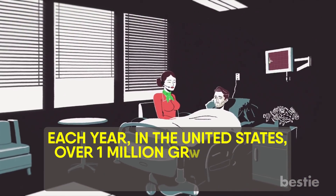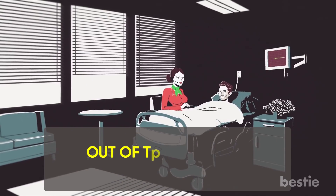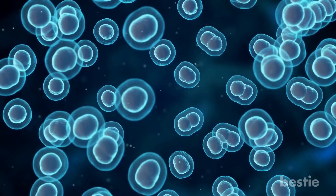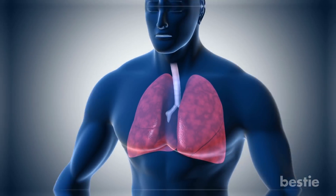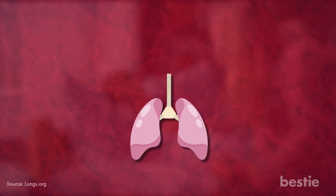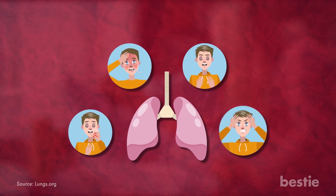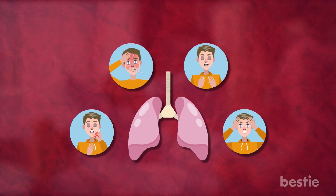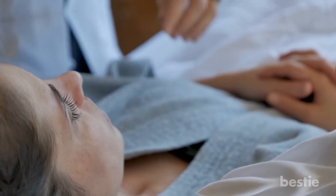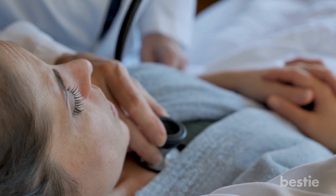Each year in the United States, over a million grown adults enter the hospital because of pneumonia, and out of that number, 50,000 don't make it. Pneumonia spreads large amounts of bacteria throughout your lungs, and something as mild as a cold can put you in contact with it. Symptoms of pneumonia include coughing, fever, trouble breathing, and a terrible chill throughout your body. Your chances of getting pneumonia rely heavily on your pre-existing conditions, so if you already suffer from lung disease, watch out for these symptoms and see a doctor if necessary.